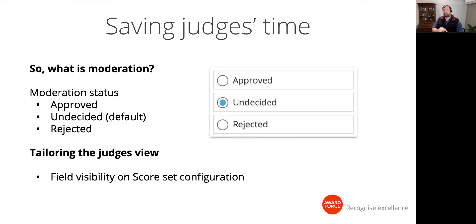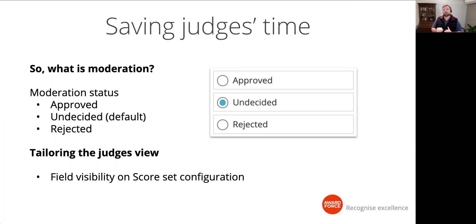You can optimize judges' time even further by tailoring what they actually get to see in entries. By removing information that is simply not relevant to them, you provide a clear, uncluttered user interface which allows judges to concentrate on the task at hand. Whilst judges are likely never going to know what you've done for them, they should still enjoy their experience — increasing the likelihood of them signing up again next year. Let's look at how to configure what judges see by configuring our score set.